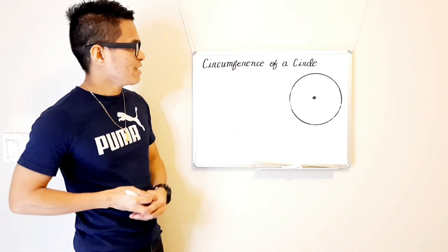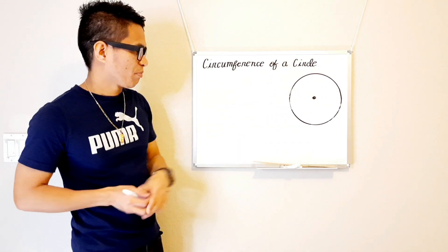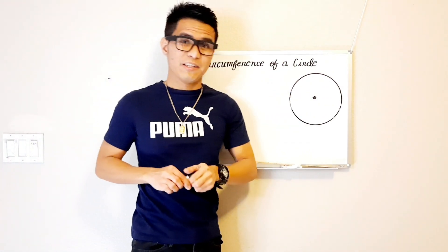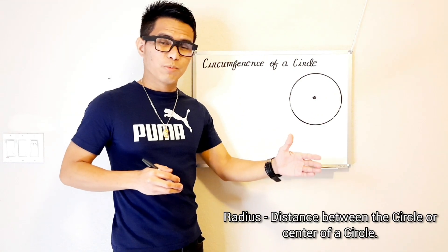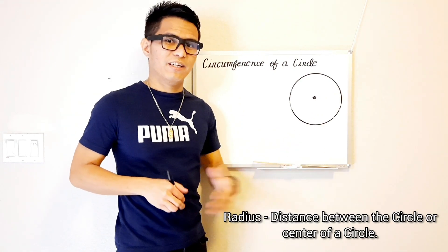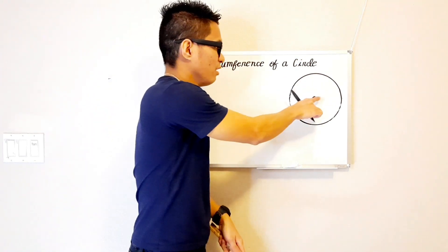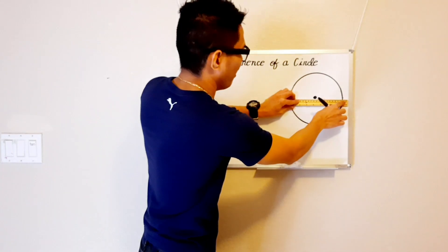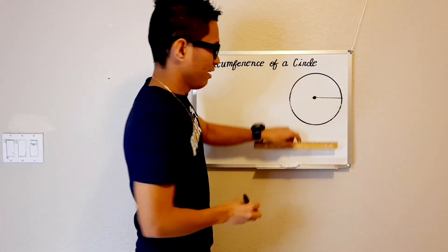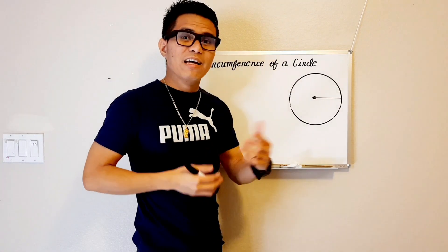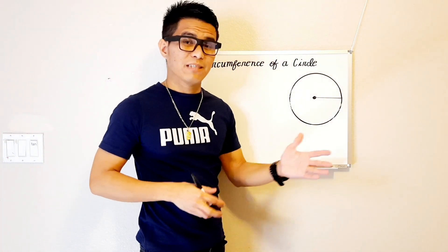When we say circumference, this is the distance around the circle. Let us now begin with the radius. When we say radius, it is the distance between the circle or center of a circle. So I'm gonna make a line from here to here like what I did before. And that's what we call radius. Now let's say that our radius is still 4 cm.